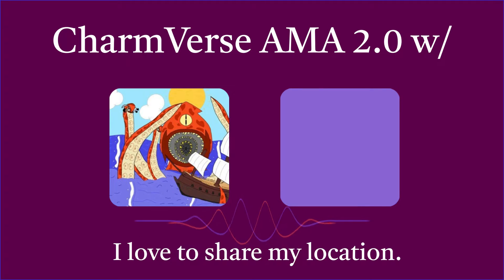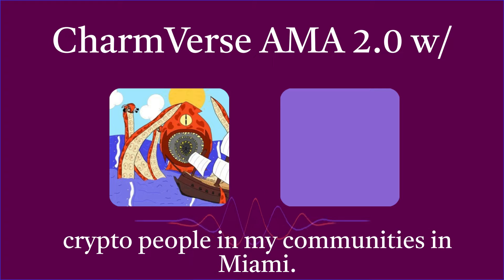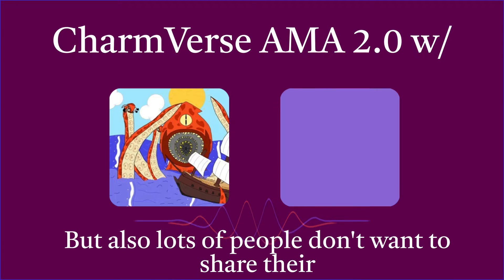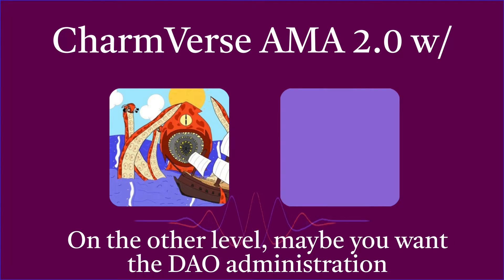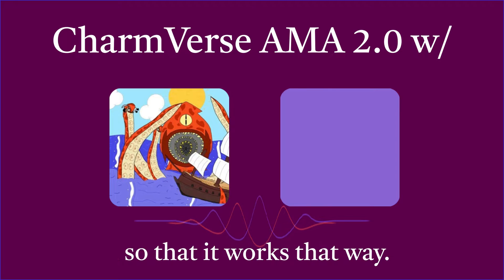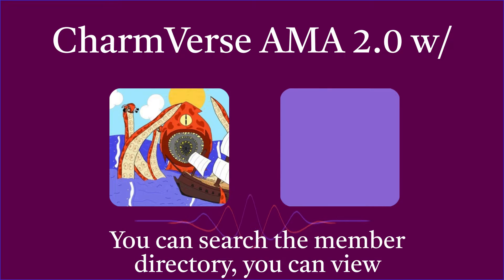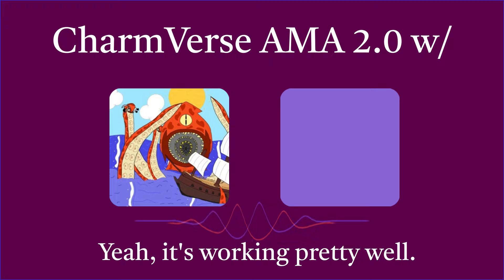Location is another example. I love to share my location — I live in Miami, and I love to meet other crypto people in my communities there. I like going through the member directory to find anyone who's nearby. But lots of people don't want to share their location. It's up to the user themselves — they can just not enter it. Or maybe you want the DAO administration to know your location but not your fellow members. Admins can set that up. You can also search the member directory and view it as beautiful profile cards or in a spreadsheet table.